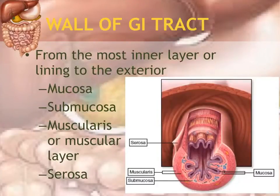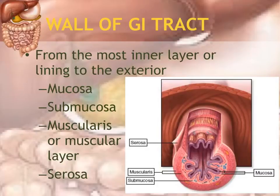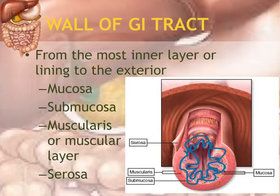There are four layers to the wall of the GI tract. From the innermost layer outward: the mucosa, then the submucosa, then the muscularis, and then the serosa. The mucosa is in direct contact with food passing through it, surrounded by the submucosa, followed by the thick muscularis layer, and finally the thin serosa layer covering the outside.